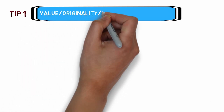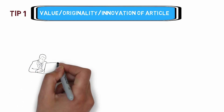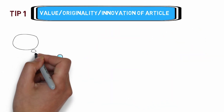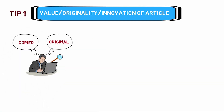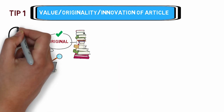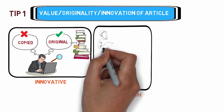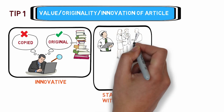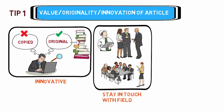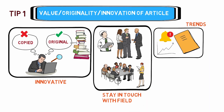Tip number one is to consider the value, originality, and innovation of your researched area. Editors and reviewers are looking for innovative, valuable, and original research that contributes to theory, literature, and practice. To stay updated, stay in touch with your field's professionals and developments, and get e-alerts from good journals to know publishing trends.